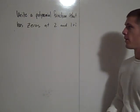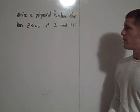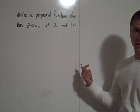Okay, so here you're asked to write a polynomial function that has zeros at 2 and at 1 plus i.